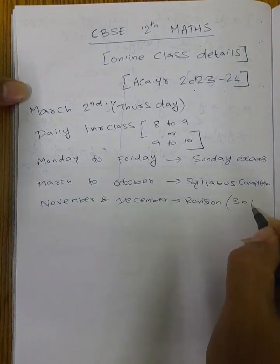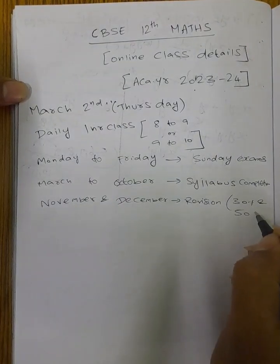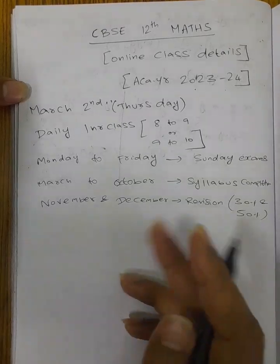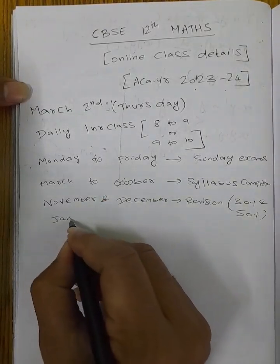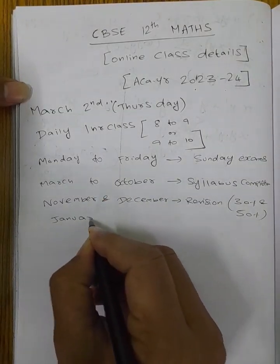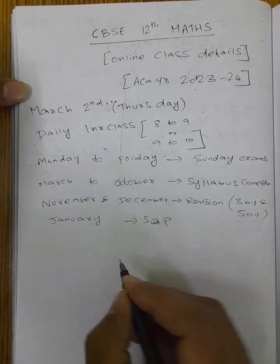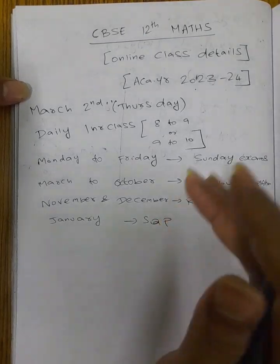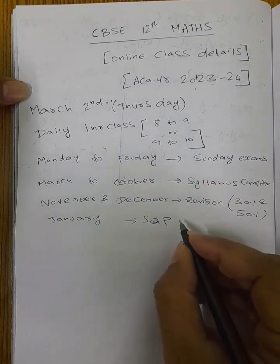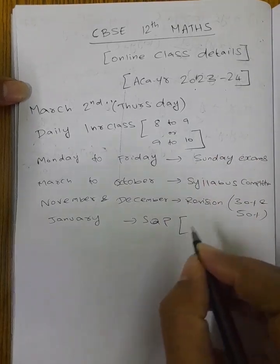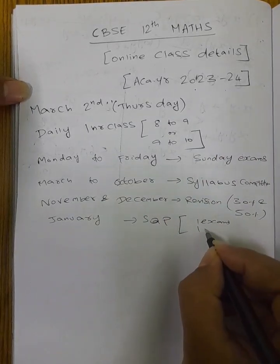There will be 30% day revision and 50% day revision in November and December. In January month, there will be total sample question papers. Sample question paper means board example question papers — how they are released, in the same pattern. One exam, that is the paper correction, and that is the discussion.